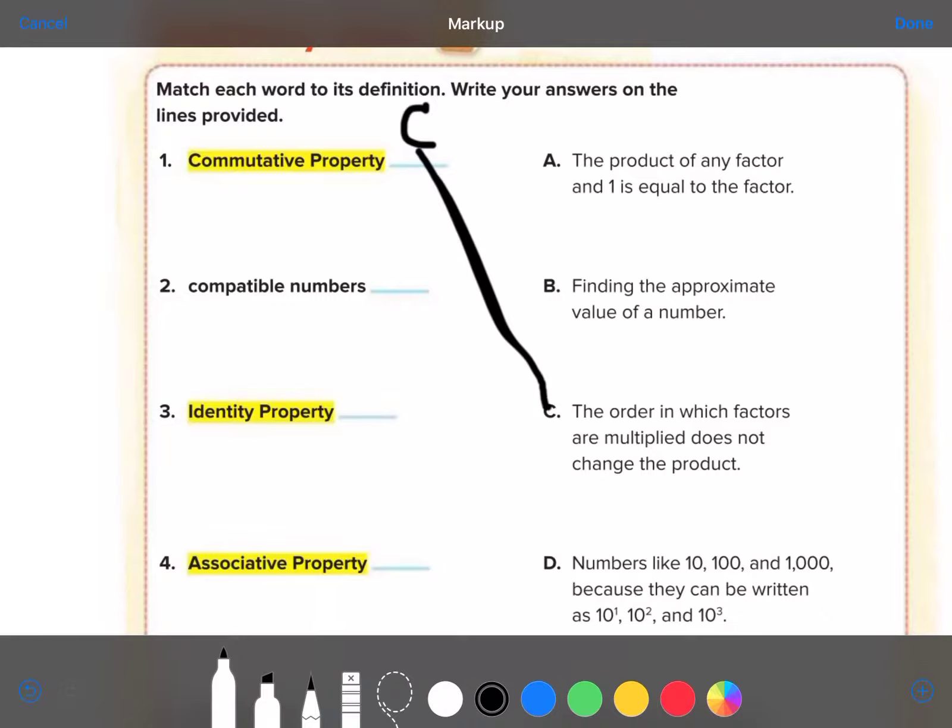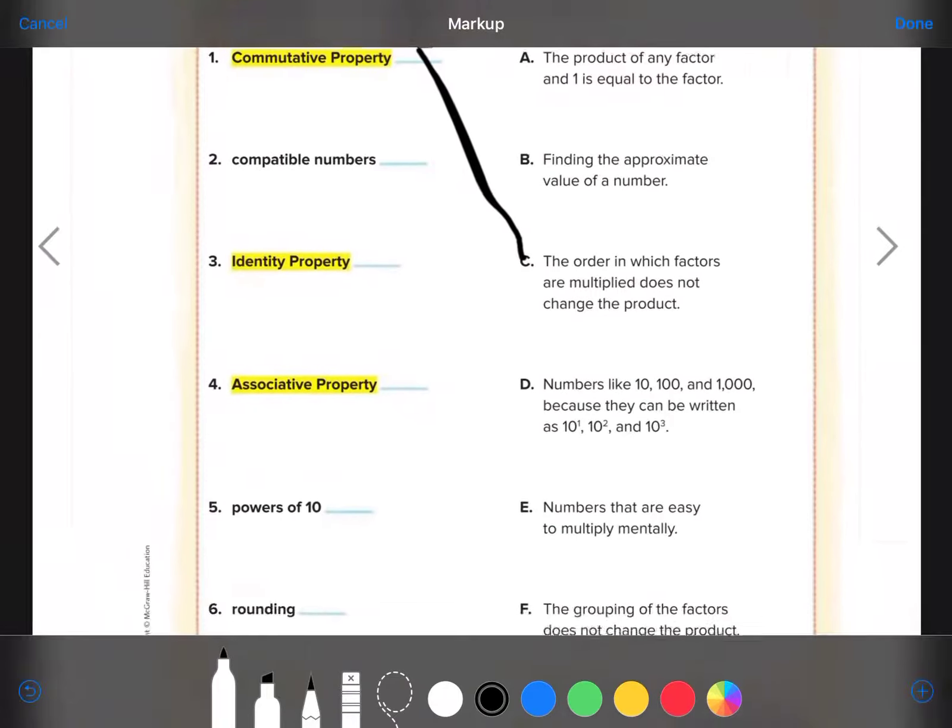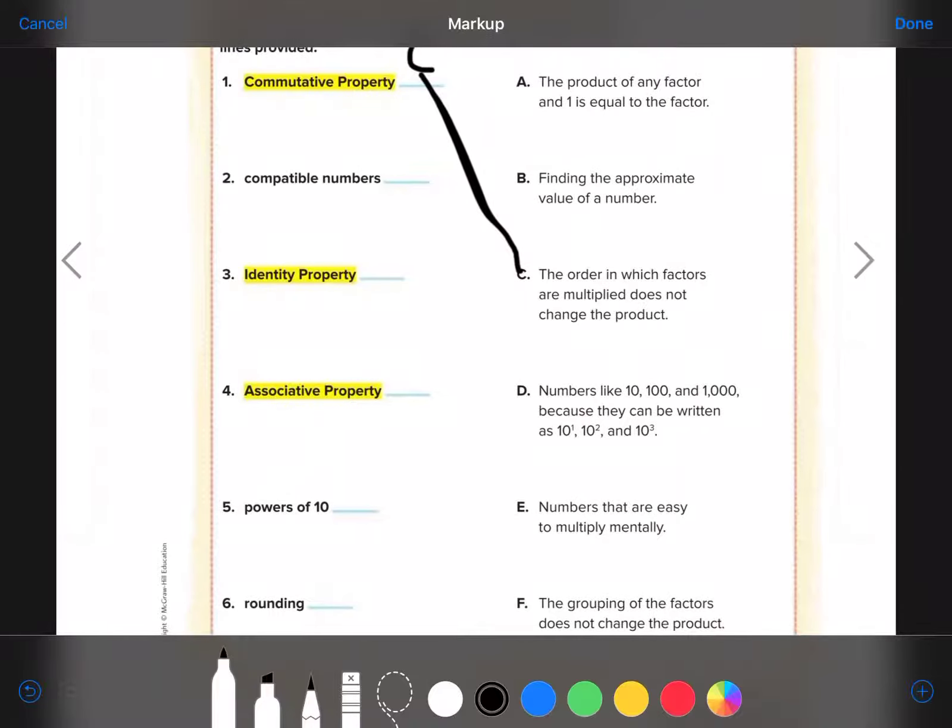Compatible numbers. Compatible numbers are numbers that are easy to multiply mentally.